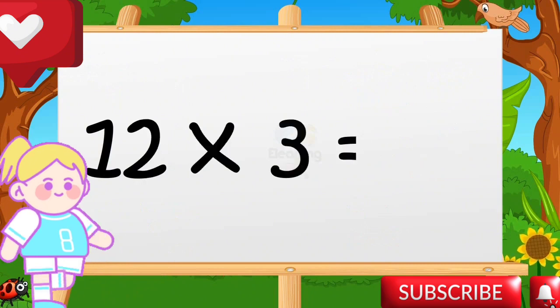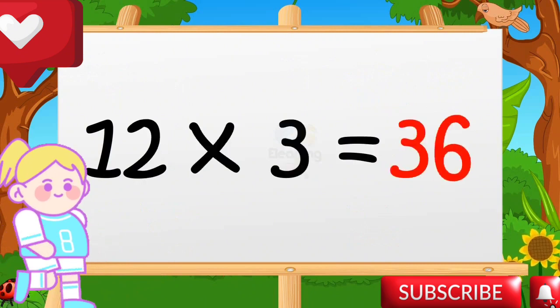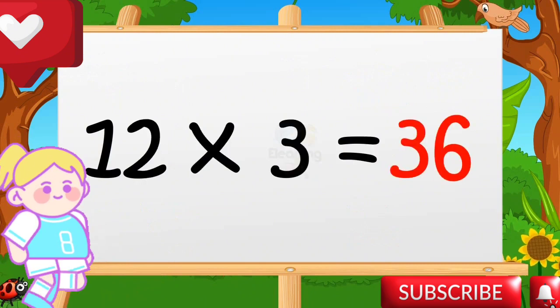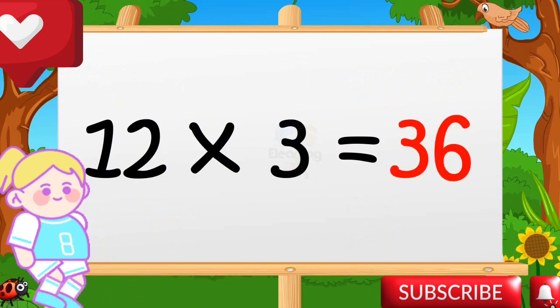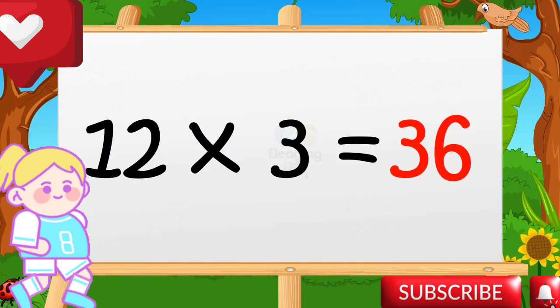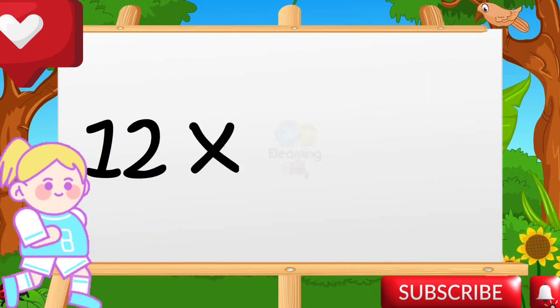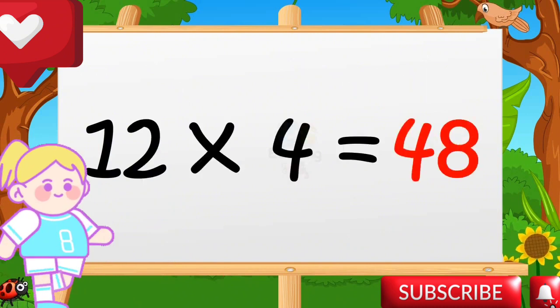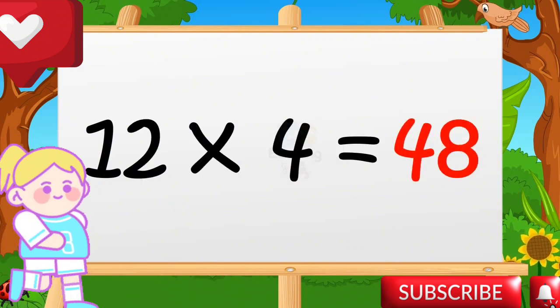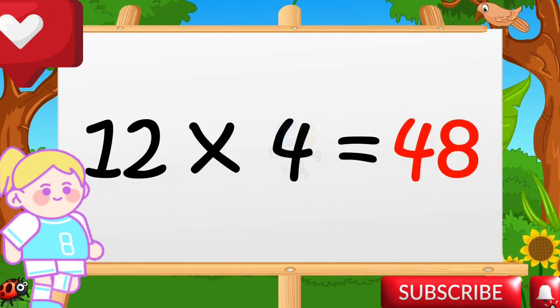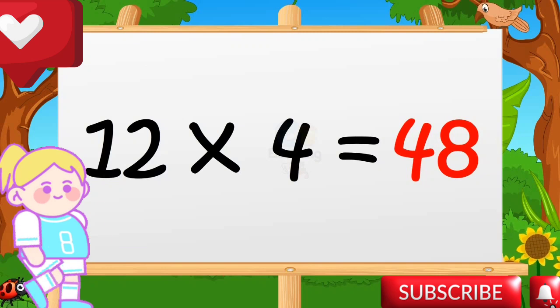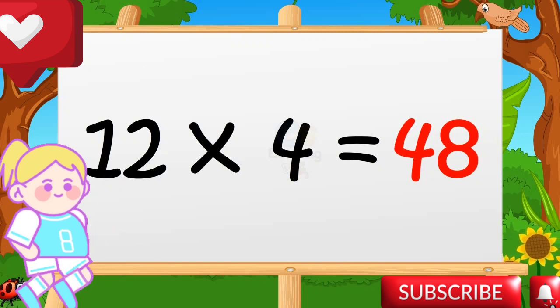Twelve threes are thirty-six. Twelve fours are forty-eight.